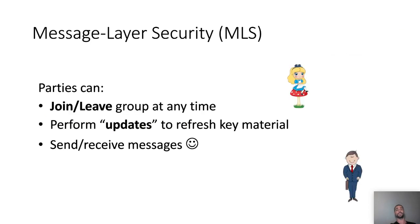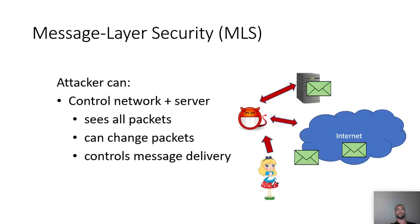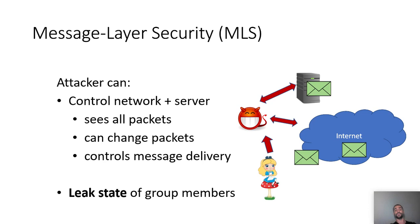The functionality provided by MLS is the following. Parties can join a group when they're invited by group members. They can leave the group at any time. They perform updates to refresh key material and they can also send and receive messages. The attacker controls the network and the server — he sees all packets transmitted in the network, can change packets, controls message delivery, and can also leak the state of group members.